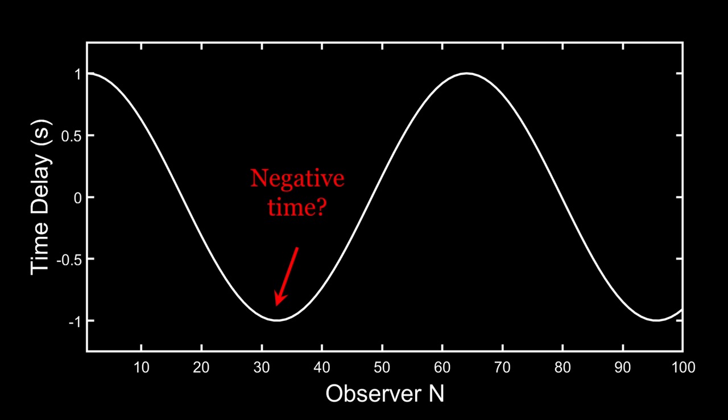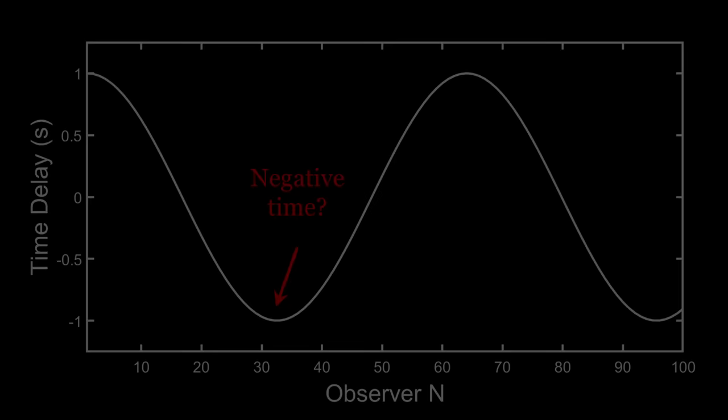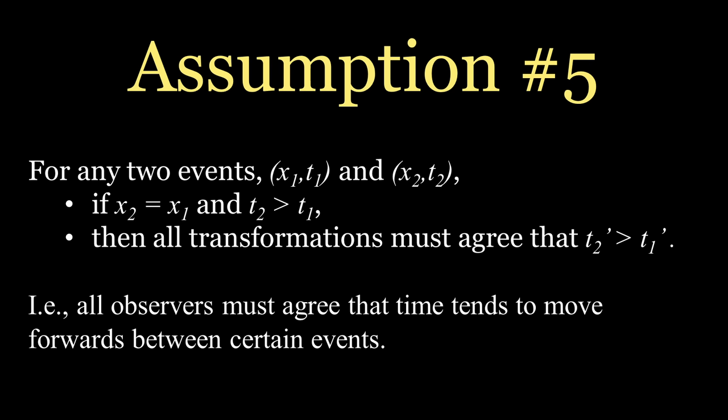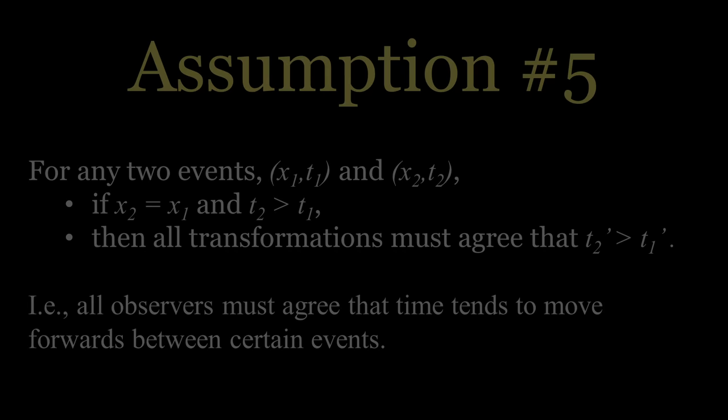Well, obviously, that cannot possibly be the case. So let's introduce a fifth assumption into our universe. Assumption number five. For any two events, x1, t1, and x2, t2, if x2 equals x1, and t2 is greater than t1, then all transformations must likewise result in t2 prime greater than t1 prime. In other words, all observers must agree that time tends to move forwards for certain durations. This condition immediately removes the second option from our list, leaving behind only one logical possibility.